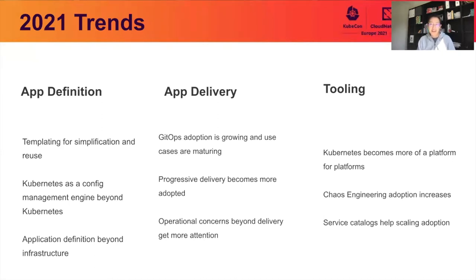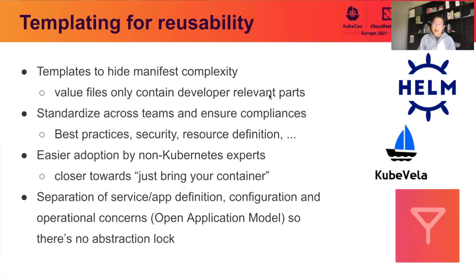It's great to continue discussing the trend of application delivery and management. I'll continue from application definition first, which is very close to developer and operator experience. Kubernetes is a great platform for delivering and managing applications, but it's not that easy to learn — it exposes a lot of infrastructure-level details like networking, security, and storage to users. Kubernetes is not the end game, which is why a lot of people are trying to build upper-layer abstractions on top. Templating is one of the most widely used technologies because it allows you to define a bunch of best practices as templates and then expose only the needed parameters to end users.